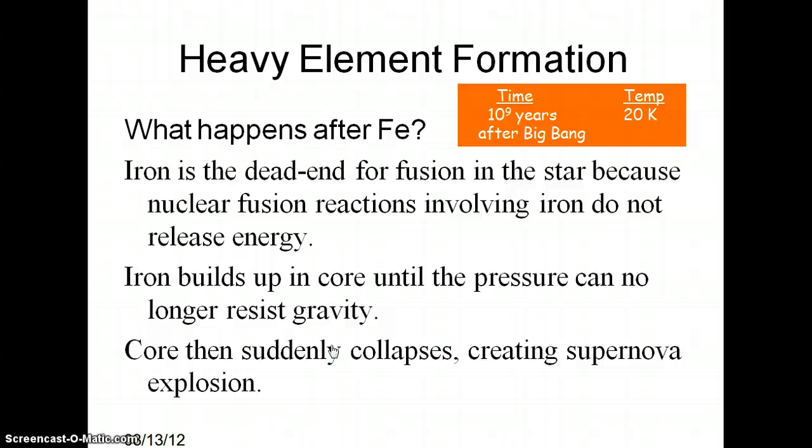When the star makes iron — which is about 10 to the 9th years after the Big Bang — that's basically the dead end for fusion. Nuclear fusion reactions involving iron do not release energy. When you slam atoms together up to iron, you're getting energy out, but once you start making iron, it can no longer slam into anything else and produce energy — now it takes energy. So you build up enough iron from the silicon burning, the heavy iron collapses to the core, pressure builds up because that iron is not fusing, and then suddenly the core explodes in a supernova.